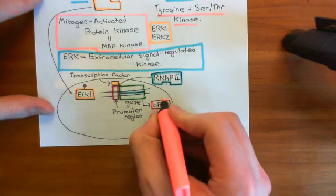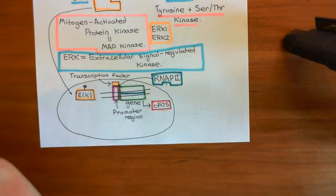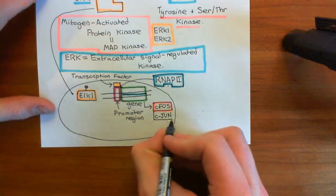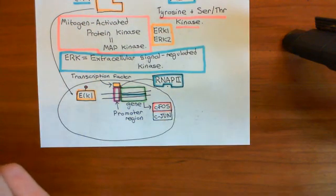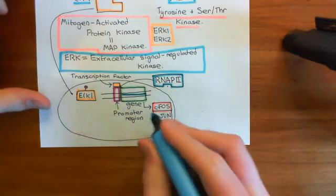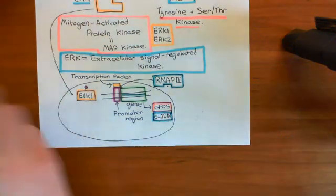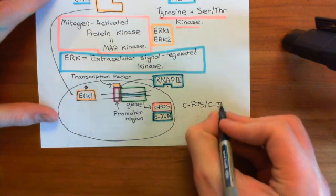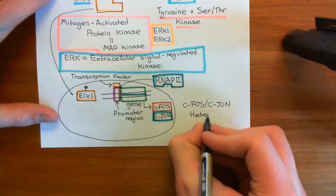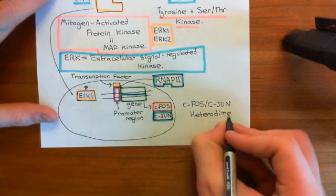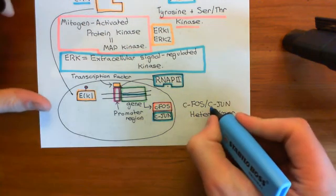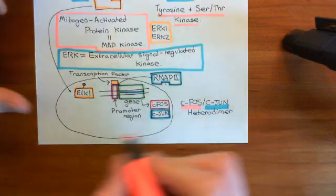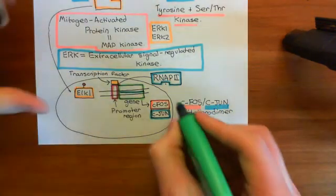C-fos itself forms a complex with another protein called C-jun, which is already present within the nucleus, and together they act as a transcription factor. This is called a C-fos/C-jun heterodimer. A dimer is a two-membered complex — a complex consisting of two things. 'Hetero' means different, so the two components dimerised together are different: one is C-fos and one is C-jun.